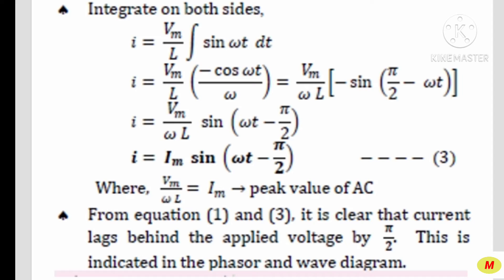So the equation becomes i = (Vm/L) · (−cos ωt / ω), which equals (Vm/Lω) · (−sin(π/2 − ωt)), where cos ωt is replaced as sin ωt. Thus i = (Vm/ωL) · sin(ωt − π/2), giving i = Im sin(ωt − π/2), where Im = Vm/(Lω) represents the peak value of the alternating current. From equations 1 and 3, it is clear that the current lags behind the applied voltage by the angle π/2, which is 90 degrees.